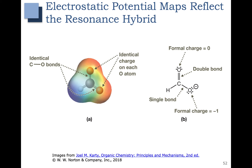One way to think about resonance is to look at electrostatic potential maps, which accurately reflect the resonance hybrid. For the structure shown here, we have a negative charge on the bottom right oxygen and no charge on the top oxygen. Its resonance structure would have a negative charge on the top oxygen and none on the bottom. The resonance hybrid would have a partial negative on both oxygens, and that's exactly what we see in this electrostatic potential map - the red indicating negative charge is evenly spread out over both oxygens.